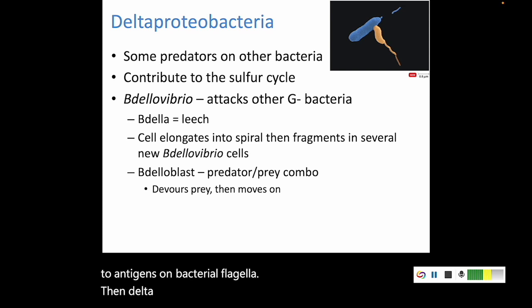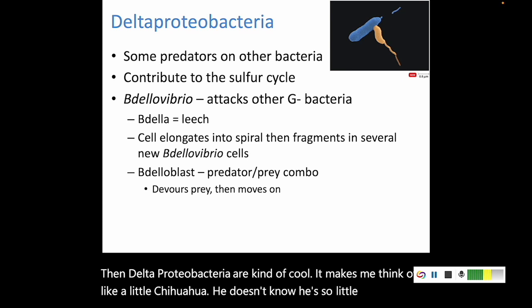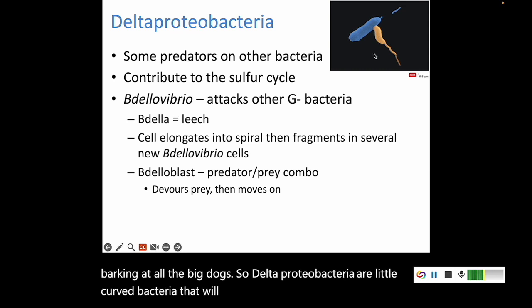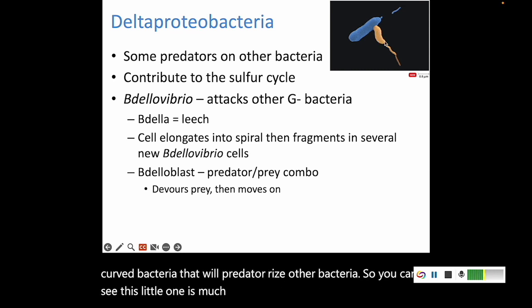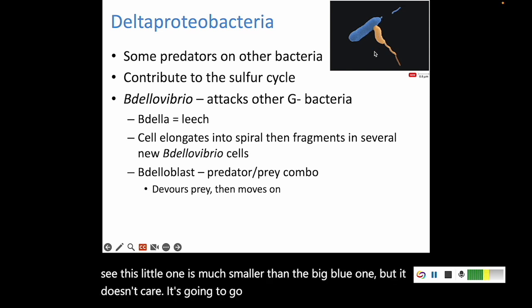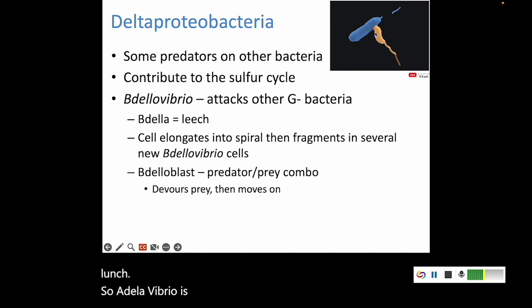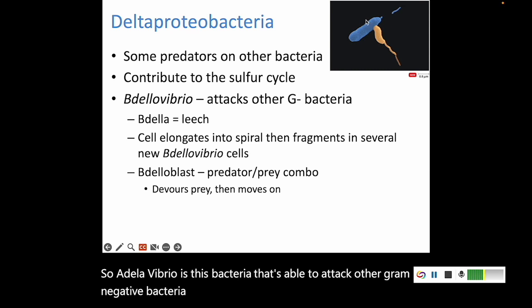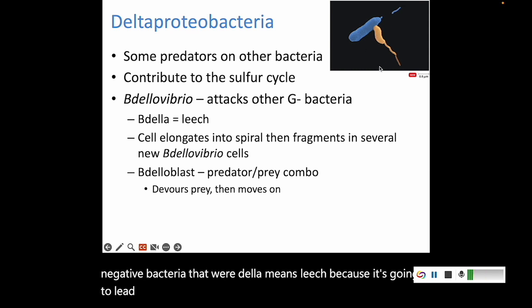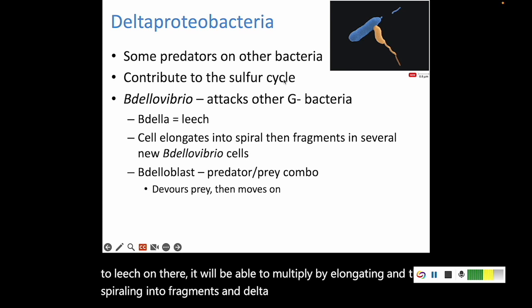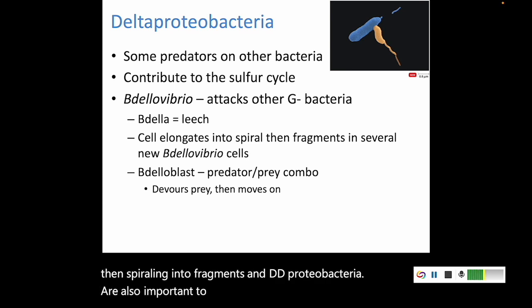Delta proteobacteria are kind of cool — they make me think of a little chihuahua who doesn't know how small he is, barking at all the big dogs. Delta proteobacteria are little curved bacteria that will predate on other bacteria. Bdellovibrio, for example, can attack other gram-negative bacteria — the word 'bdello' means leech because it leeches on to them. It multiplies by elongating and then spiraling into fragments. Delta proteobacteria are also important contributors to the sulfur cycle.